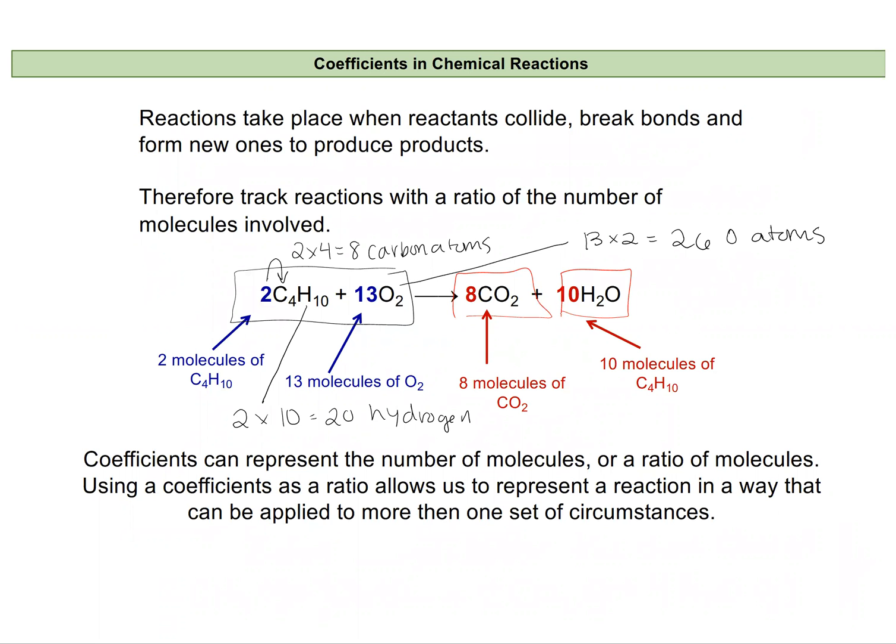And you can double-check these to make sure that we still have the same number of atoms. We have 10 water molecules, each with 2 hydrogen atoms, which is 20 hydrogen atoms. So that checks out perfectly with what we had in our reactants. And we also have 8 carbon atoms. And that matches well with what we had from our butane.